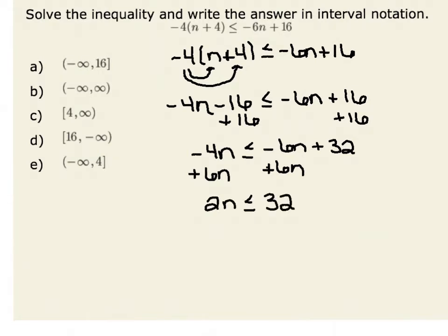Finally, I could divide both sides by 2. 2 divided by 2 makes 1, so n is less than or equal to 32 divided by 2, or 16.